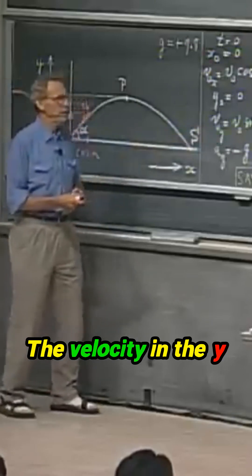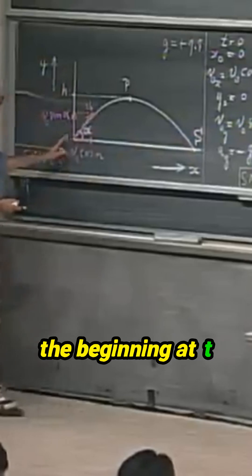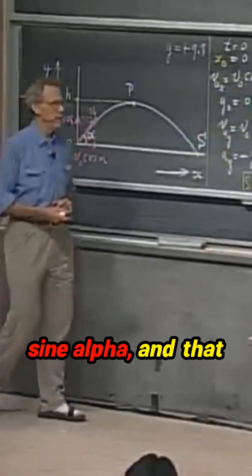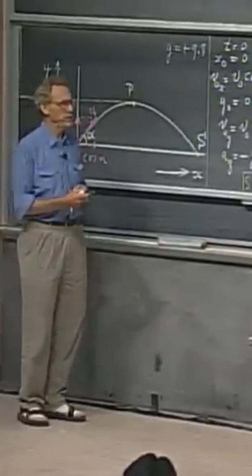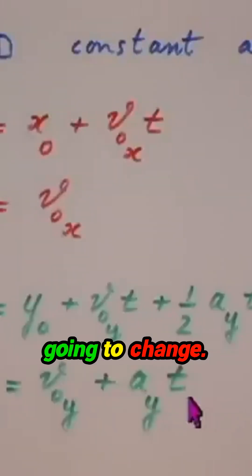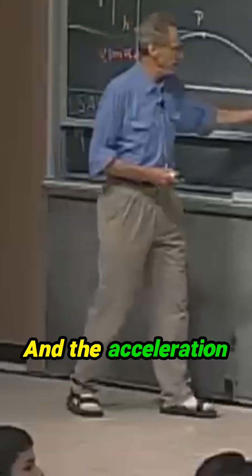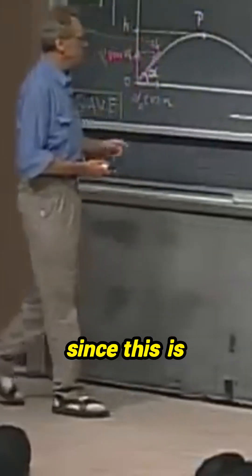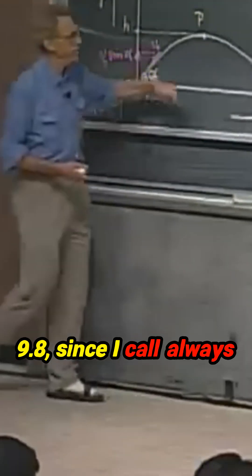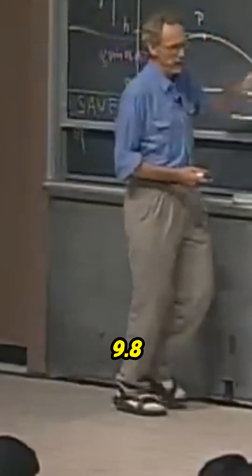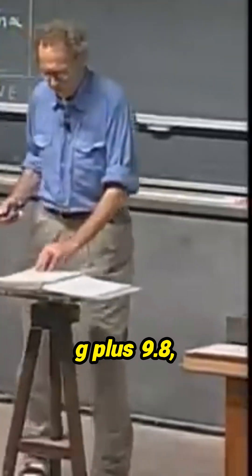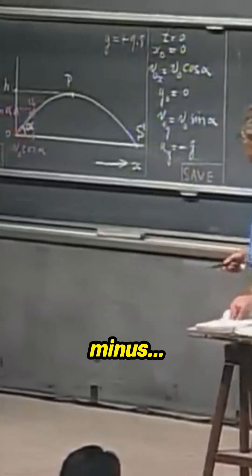The velocity in the y-direction, at t equals zero, is V zero sine alpha, and that will change because of the time term. That's why the velocity is going to change. The acceleration in the y-direction, since this is the increasing y-direction, is going to be negative 9.8, since I always call g plus 9.8, this is minus g.